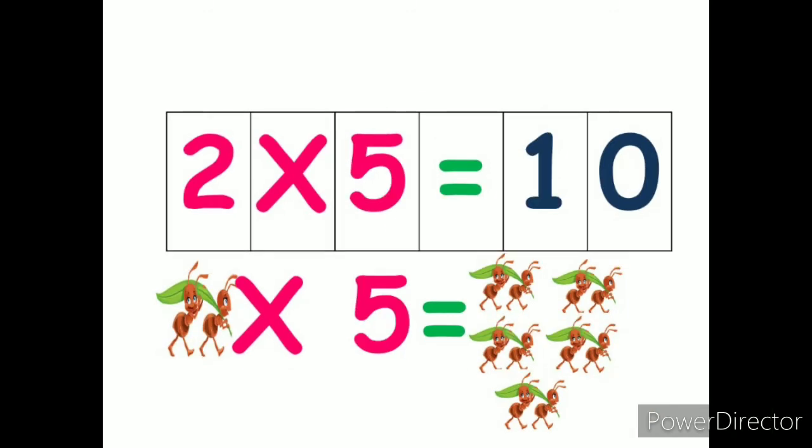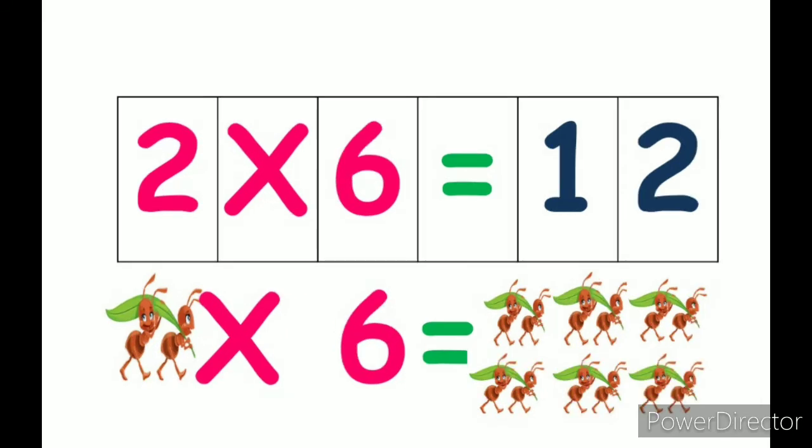2 fives are 10. Now 2 ants group of 5 will make 10 ants together. So 2 fives are 10. 2 sixes are 12. 2 ants making 6 groups. So how many ants? 12. 2 sixes are 12.